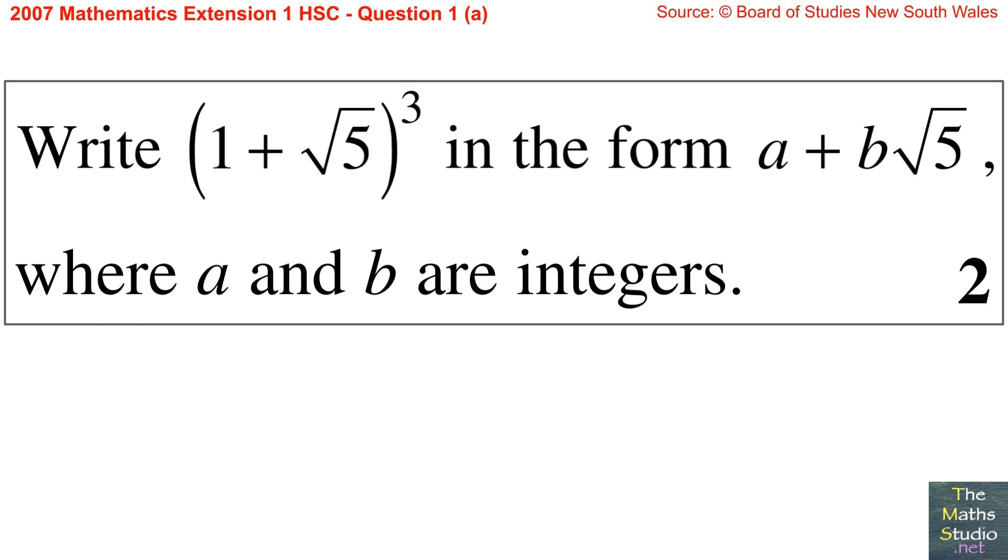Question 1, Part A. Write 1 plus the square root of 5 in brackets, cubed, in the form a plus b times the square root of 5, where a and b are integers.